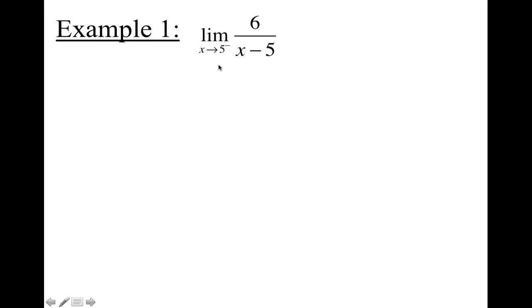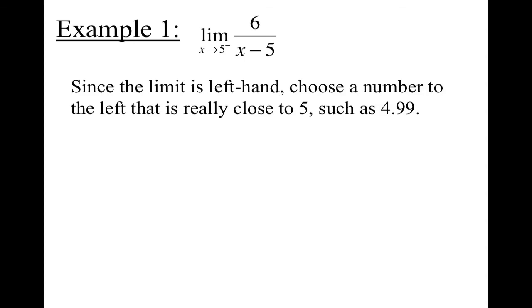I hope not. I think we can get closer than four. Yes, you will have to use decimals. So I would probably choose 4.99. So I'm going to take that 4.99 and I'm going to plug it into the function where x is, do some lovely little simplification to get negative 600.